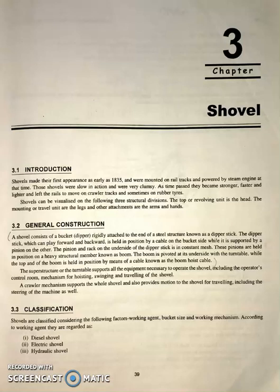A shovel can be visualized on the following three structural divisions: the top or revolution unit is the head, the mounting or travel unit are the legs, and other attachments are the arms and hands.